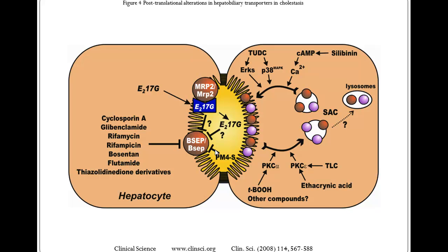Here's another picture of the bile and the bile salt exocrine pump, along with compounds that will inhibit it: cyclosporine, glibenclamide, rifamycin, rifampicin, and the thiazolidinedione derivatives. You can see this is a very complex system with many things that can upregulate and downregulate these transport systems. We're really just learning about a lot of this, and we'll learn more as you progress in your careers about active transport in the biliary system.